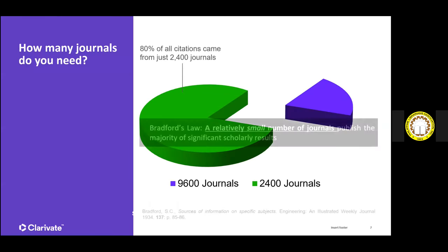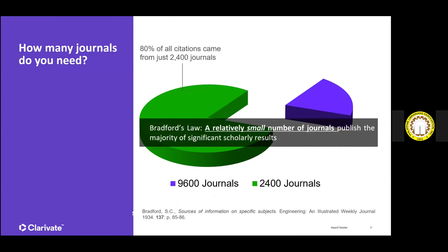There was a study conducted on journals indexed in Web of Science. They found that 80% of all citations came from only a small number of journals — out of maybe 13,000 journals, only 2,400 had 80% of the citations. This illustrates Bradford's Law, which states that a relatively small number of journals publish the majority of significant scholarly results. As a researcher, what you need is not quantity but quality of content.